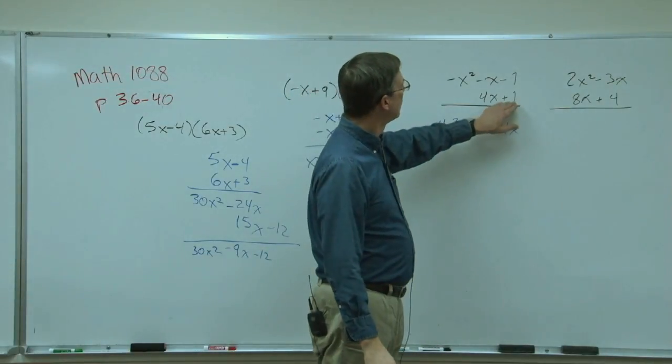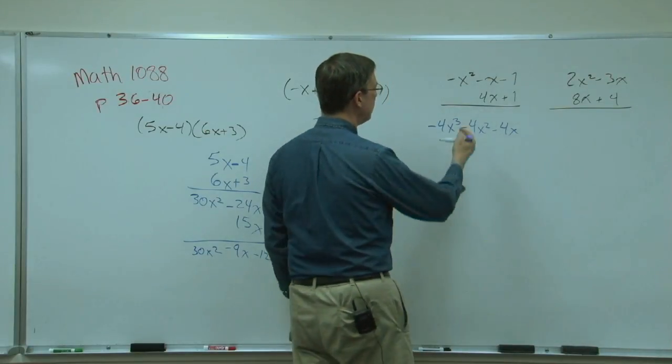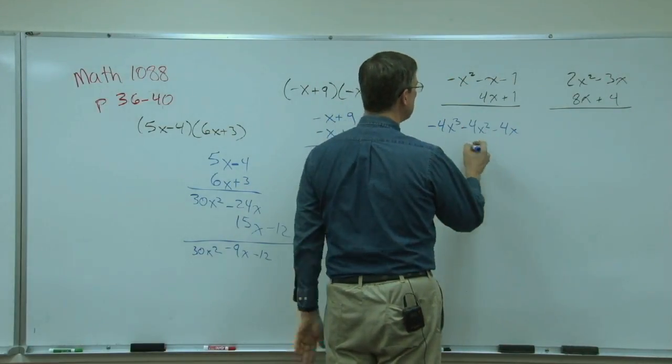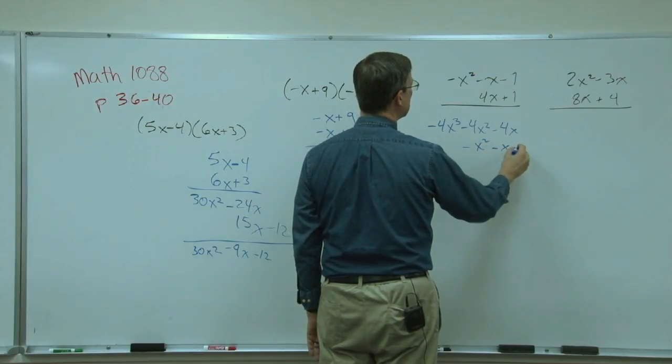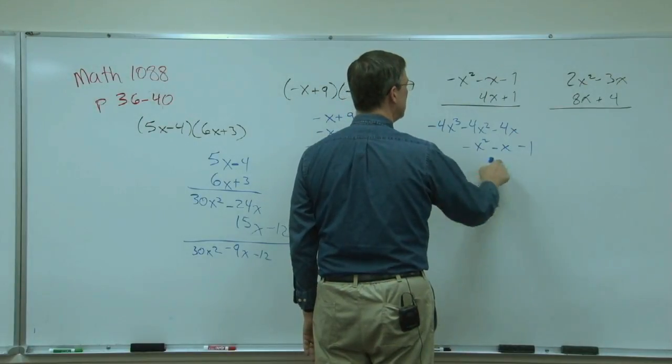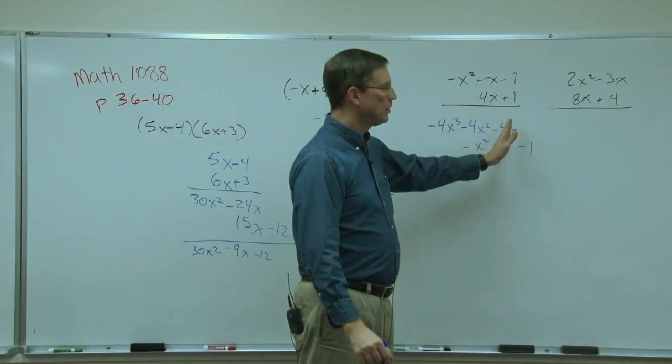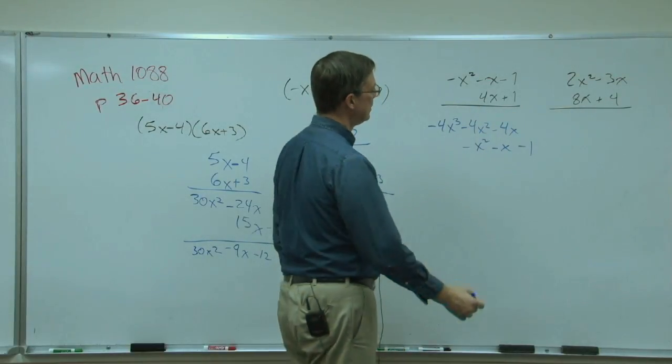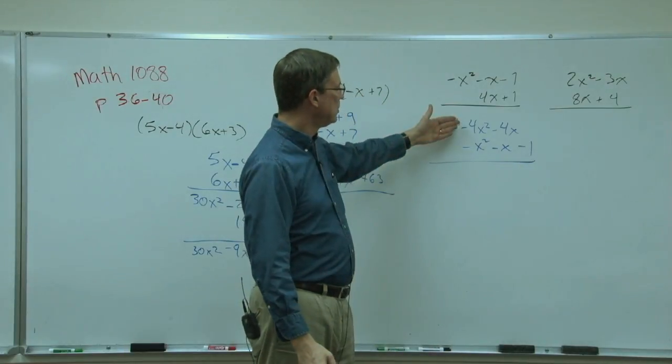All right, now we're going to do 1 times all of these. Well, hey, that's easy. We'll just bring all of these terms straight down. And negative x, negative 1. Because positive 1 times the whole thing is just exactly that same thing. But notice, I'm lining them up so that the like terms are underneath each other.